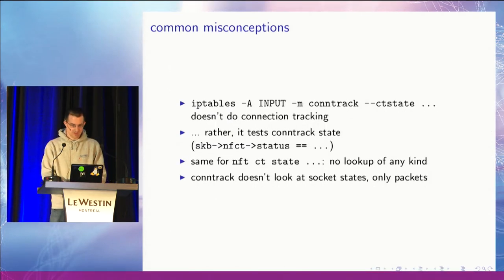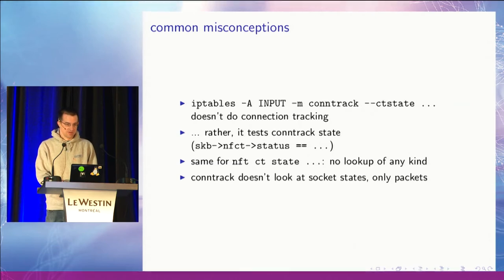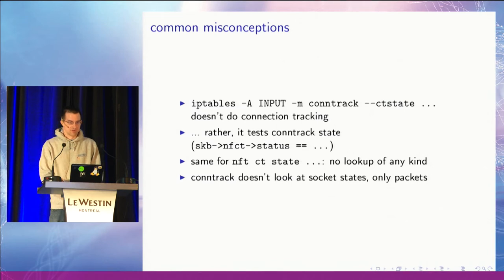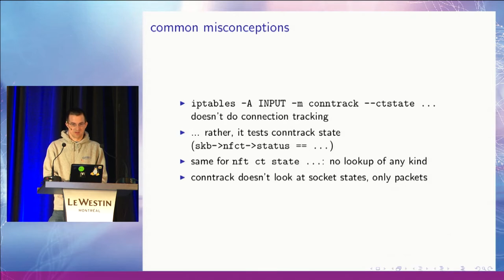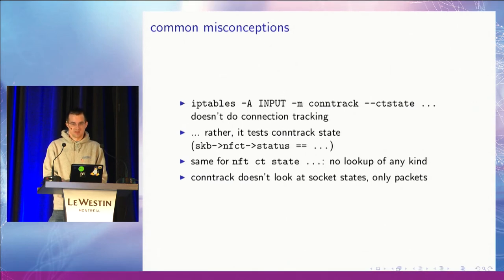There are unfortunately a bunch of misconceptions about conntrack. The most common one I hear is that IP tables has something to do with connection tracking — that's not true. If you use the IP tables conntrack match, that doesn't do connection tracking at all; it just checks the packet state as determined by the earlier connection tracking step. The same is true for the nftables counterpart. Also, conntrack does not look at socket states at all; it just looks at packets as they come in and go, so there is no extra check of the TCP stack in the kernel.